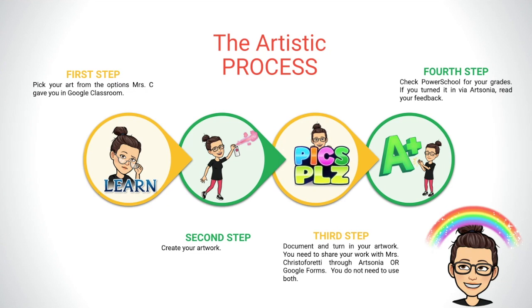This process will be followed whether you are in class or learning online. The artistic process starts with step one: pick your art through the options Mrs. Christofredi gave you in Google Classroom. You're going to learn about the elements and principles of art, maybe an artist. Step two is creating your artwork. Step three is documentation — document and turn in your artwork by sharing with Mrs. Christofredi through Artsonia or Google Forms. Step four is to check PowerSchool for your grades. If you turned it in on Artsonia, you can even read feedback.